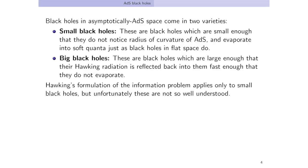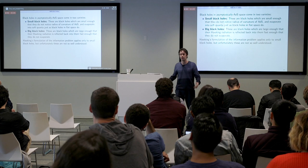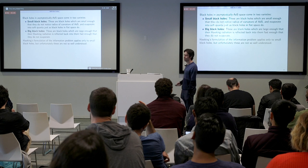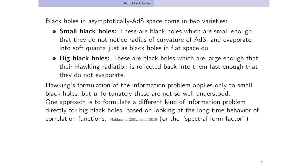Hawking's formulation of the information problem only works for small black holes, because you have to wait for the black hole to evaporate and then see if the state of the Hawking radiation is pure or mixed. Unfortunately, in ADS-CFT, we're not so good at thinking about small black holes. We formally know some things about them, but in terms of saying concrete things, there's not too much we can say.